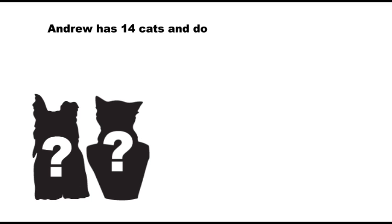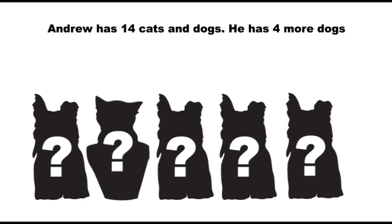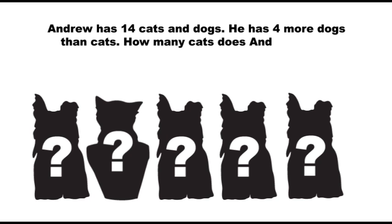Here we have an example of the problem-solving strategy guess and check. Andrew has 14 cats and dogs. He has 4 more dogs than cats. How many cats does Andrew have?